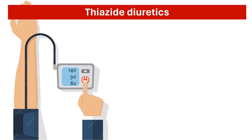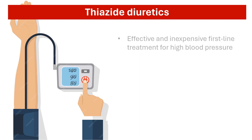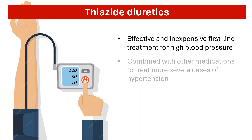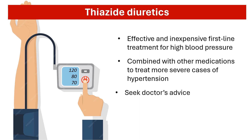Thiazide diuretics are an effective and relatively inexpensive first-line treatment for high blood pressure. They are used in combination with other medications to treat more severe cases of hypertension. However, they should only be taken as prescribed by a doctor to ensure their safe and effective use.